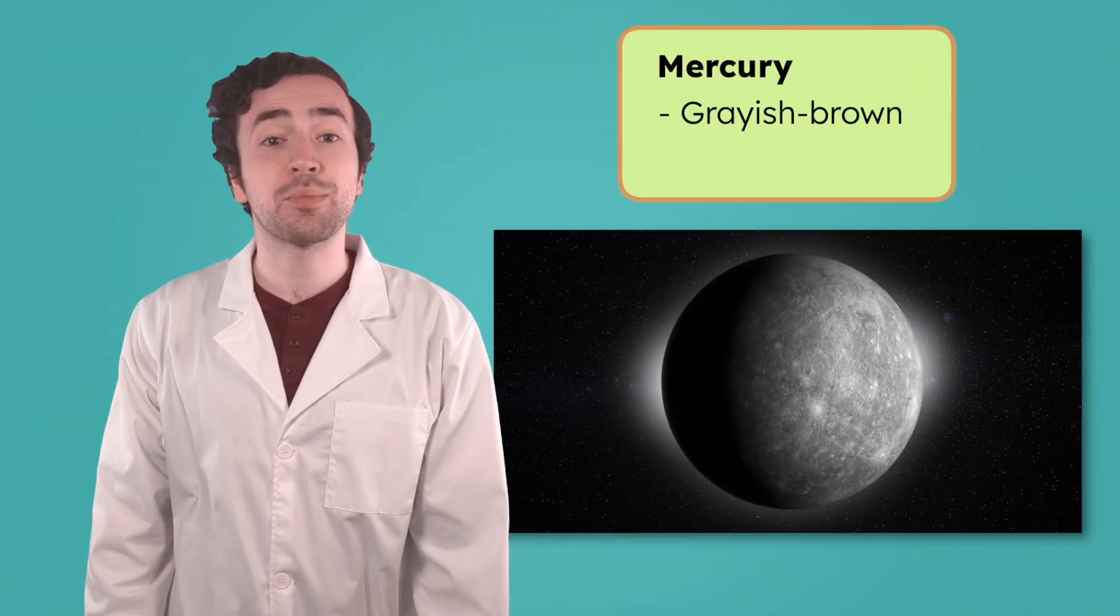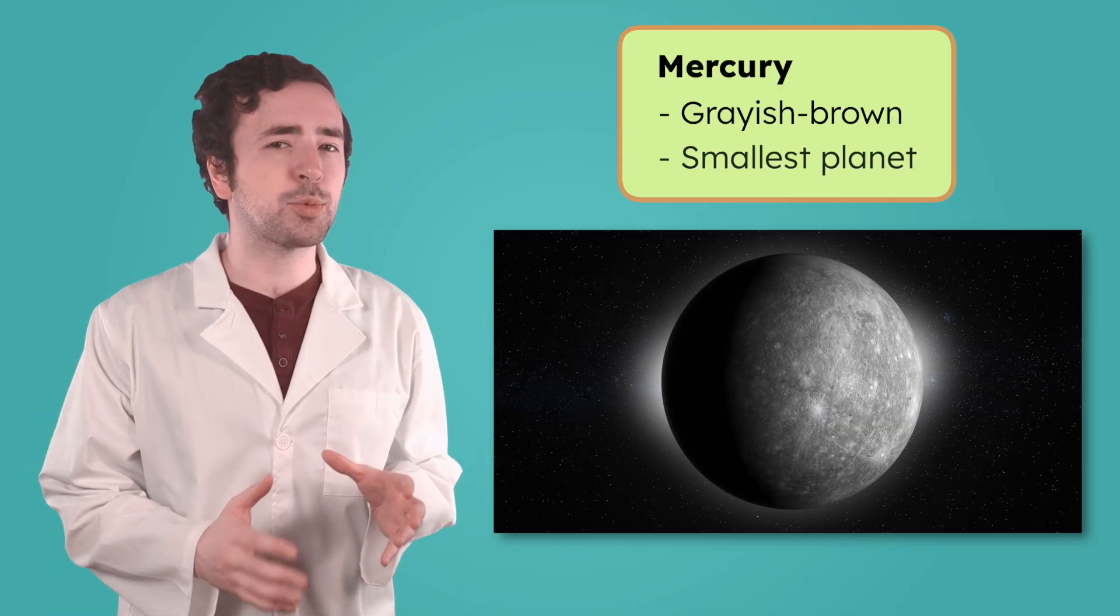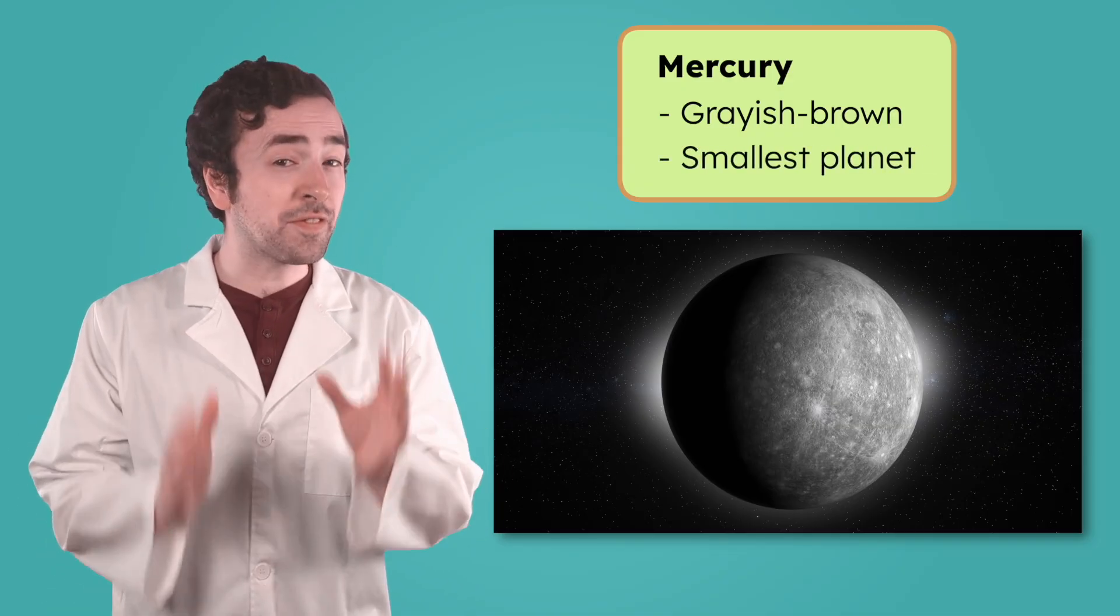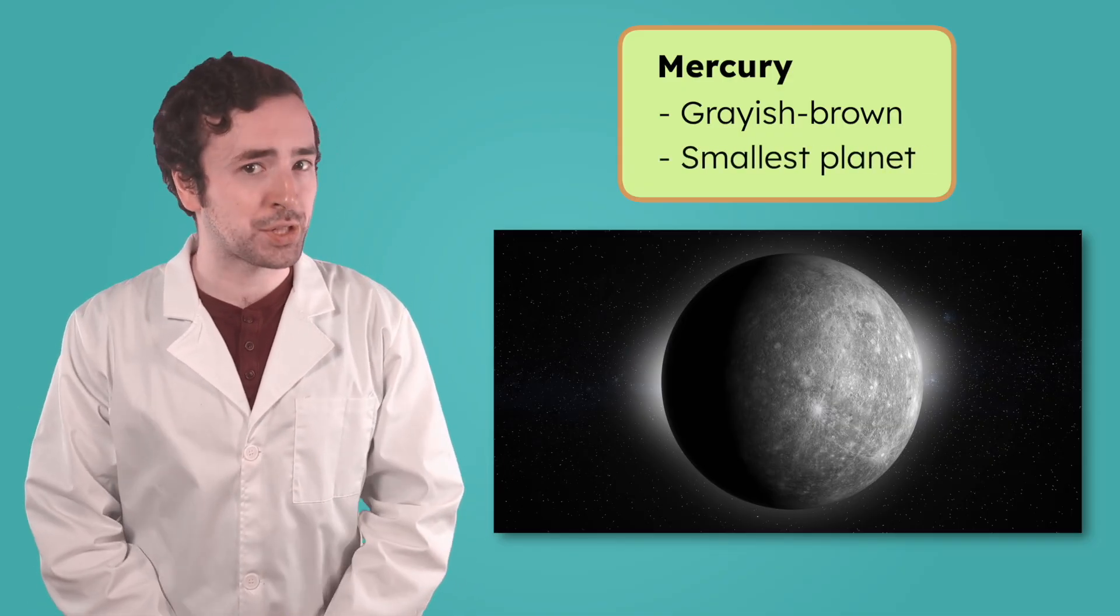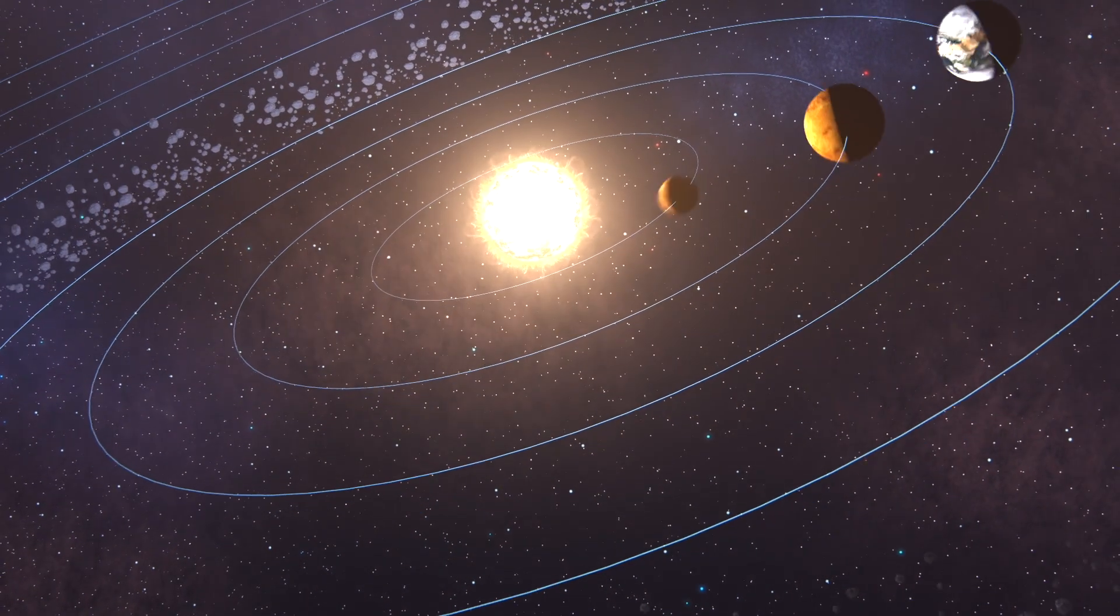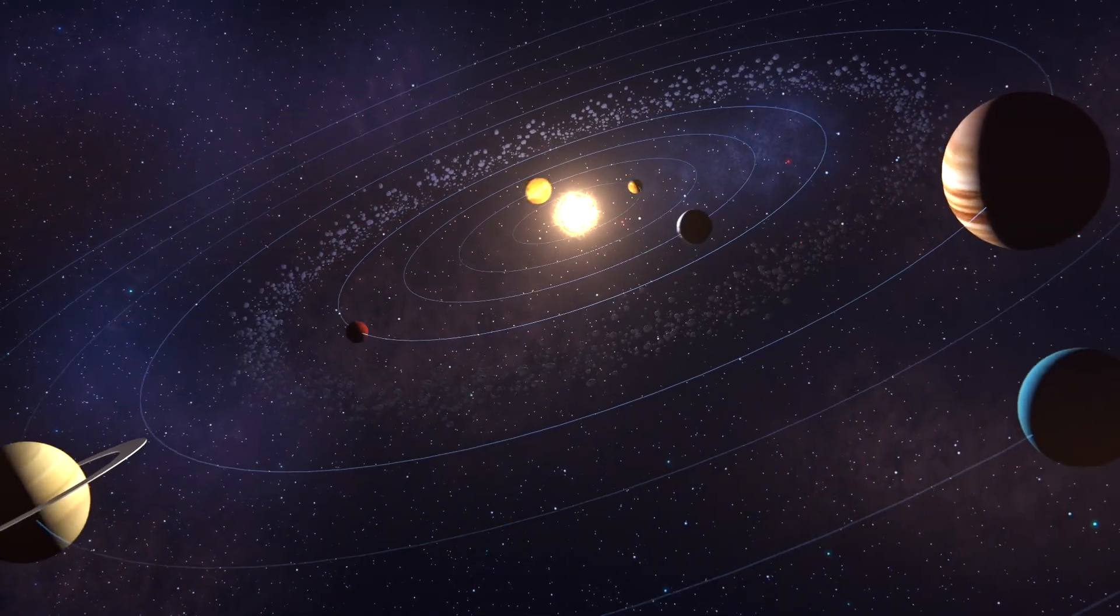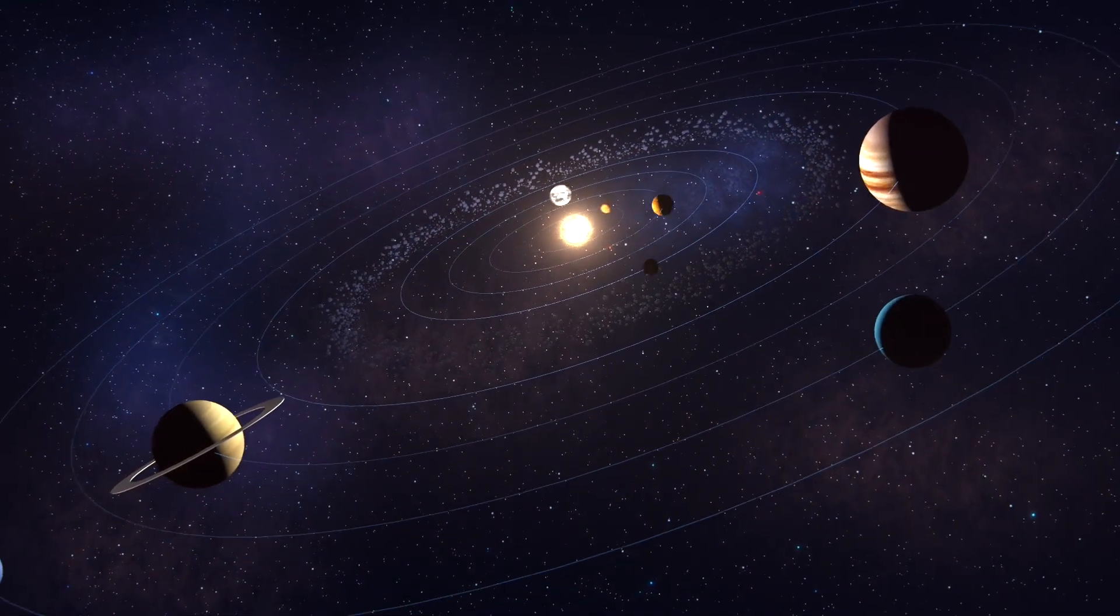Our first planet, Mercury, is the one closest to the sun. This grayish-brown planet is also the very smallest in our solar system. Plus, it's the fastest. It orbits the sun in just 88 Earth days, which means that a year on Mercury would take less than three months.